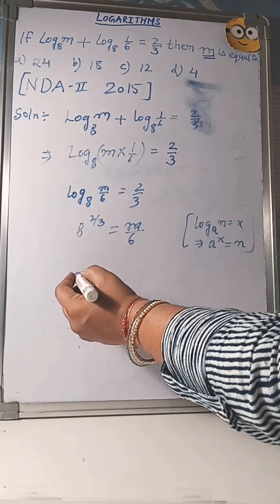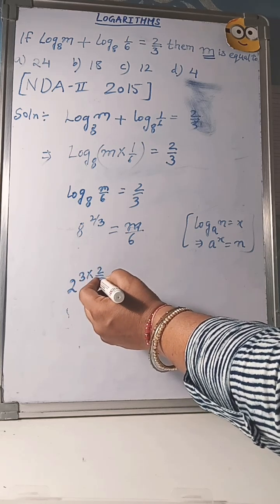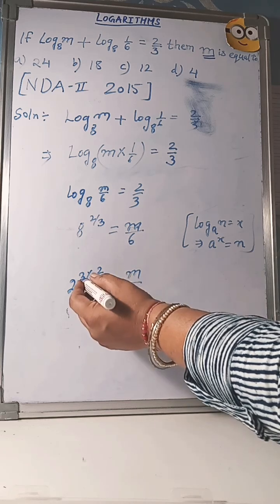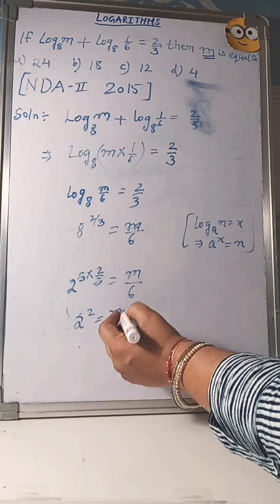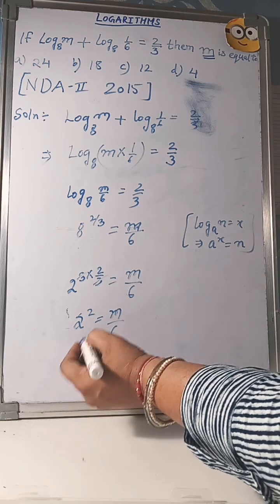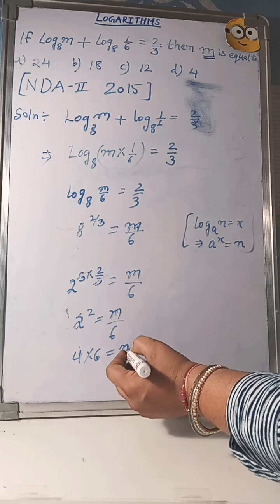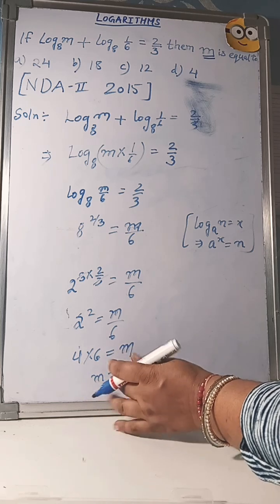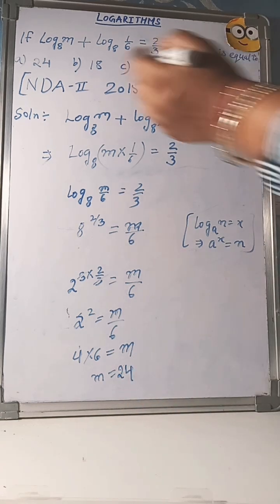Now 8 to the power 2/3, you can write 8 as 2 to the power 3, so 2 to the power 3 times 2/3 equals m/6. 3 and 3 cancel, giving 2 to the power 2 equals m/6. 2 to the power 2 is 4, so 4 equals m/6, which means m equals 24.